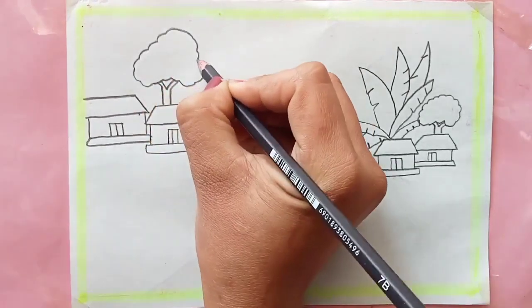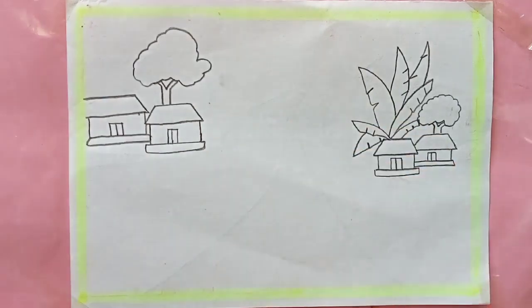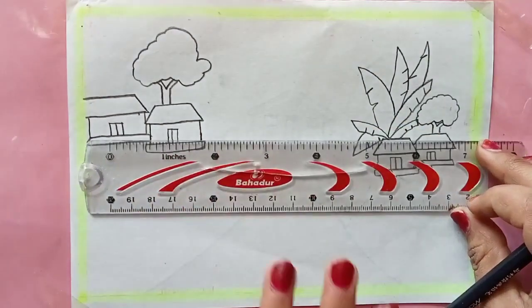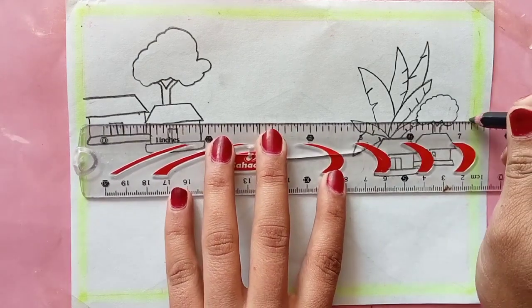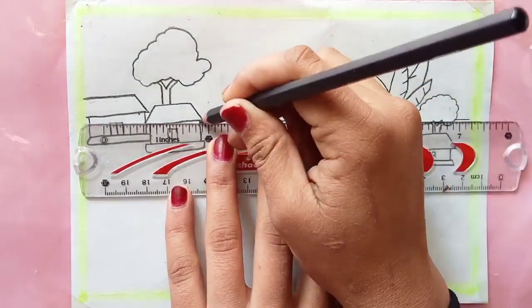The river is done and now we are heading towards other things in the scenery like the grass. Now drawing the birds in the sky and it's done.